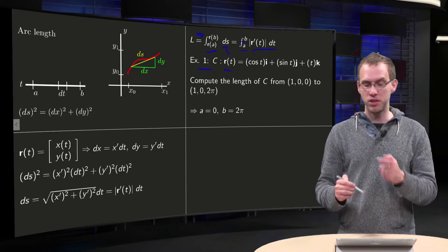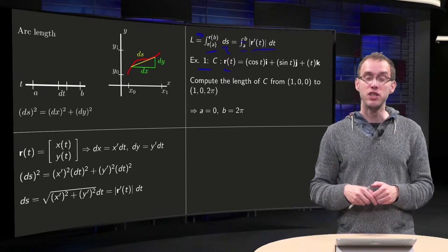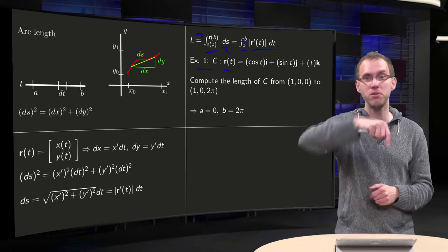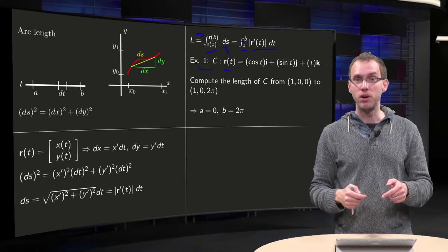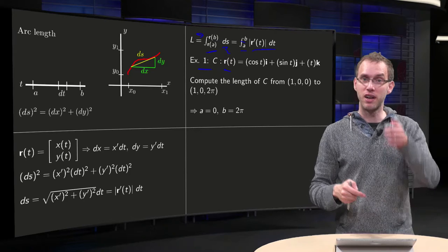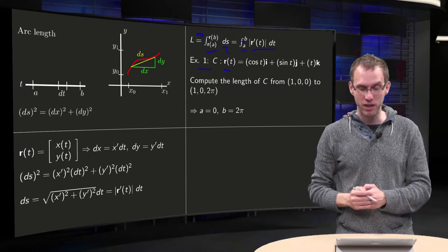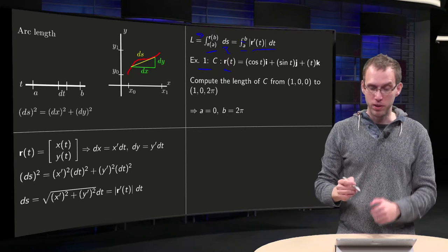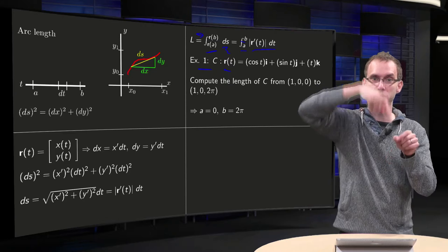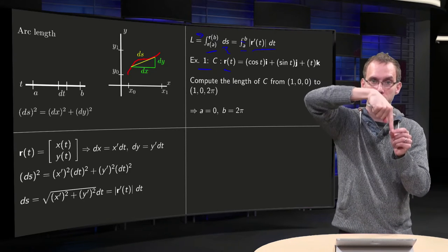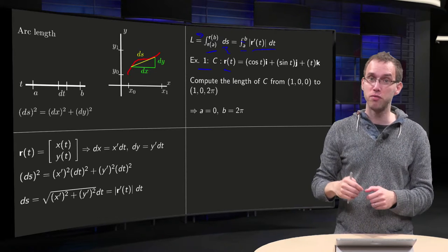r of t equals cosine t in the i direction, sine t in the j direction, plus t in the k direction. So what happens in the x-y plane: you are just circling around due to the cosine t sine t. And the t means that at the same time you are climbing. So you are circling and climbing upward. You are basically spiraling upward. How can we compute the length if you spiral from (1,0,0) to (1,0,2π)? So if you go up from 1,0 to 2π, but then circling, how long will that curve be?